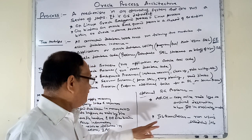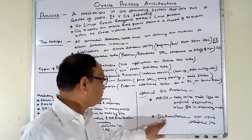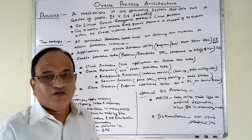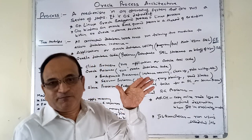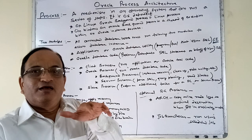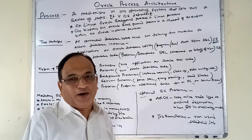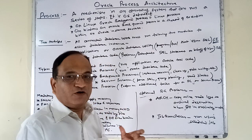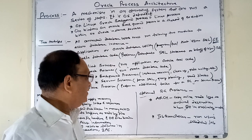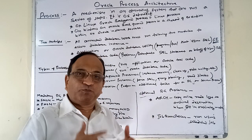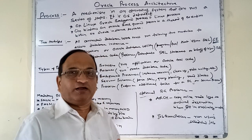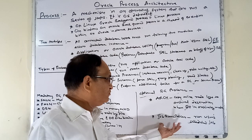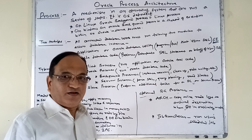The second optional background process is the Job Queue process. It is used for running scheduled jobs. For example, if an end-of-day processing program written in PL/SQL needs to run at a specific time — such as after bank closing — nobody needs to manually trigger it. The job is scheduled to run at a particular time and at a set interval, and handed over to the Job Queue process, which runs it periodically. This is similar to a cron process in the operating system. In this way, we have covered the Oracle process architecture. Thanks for watching.